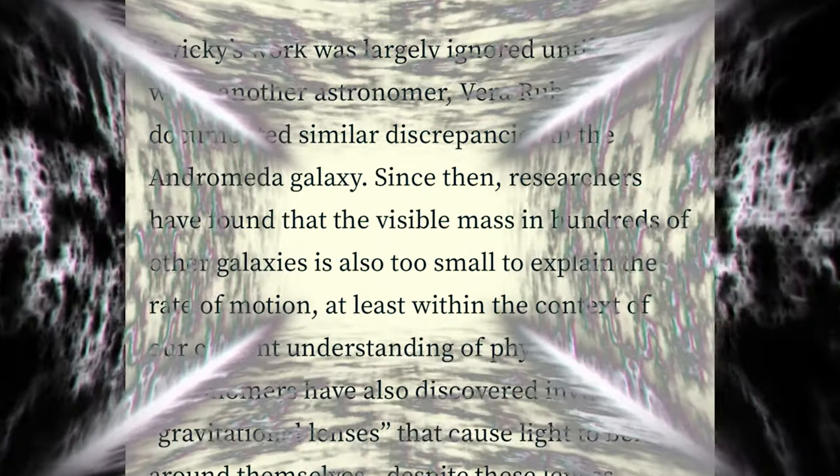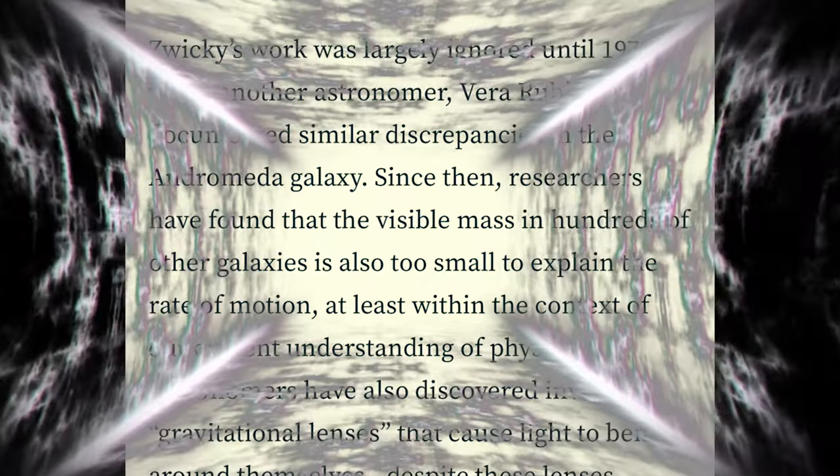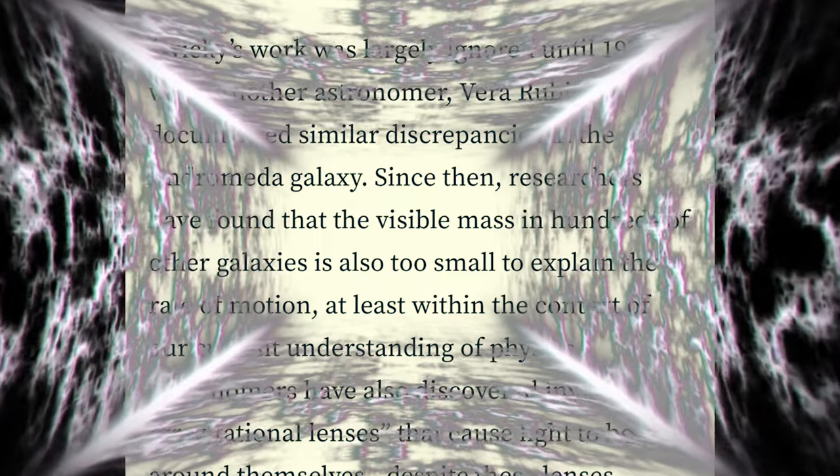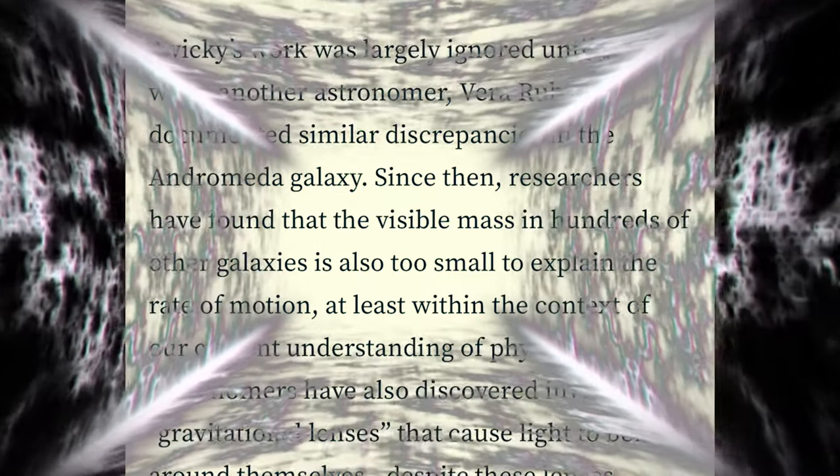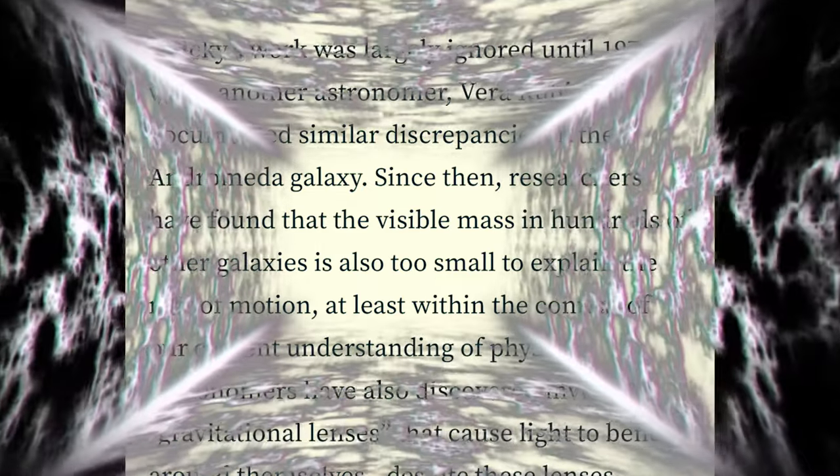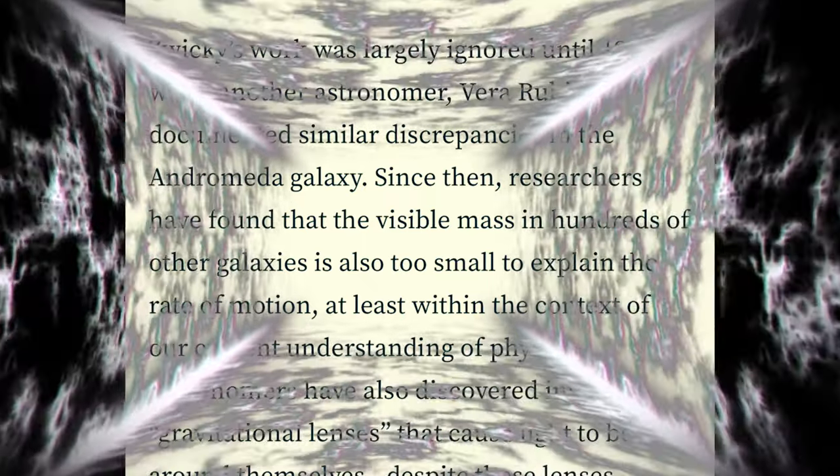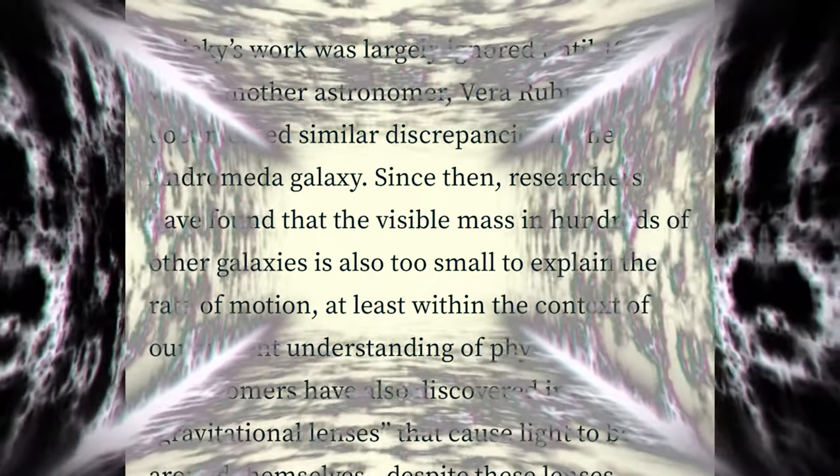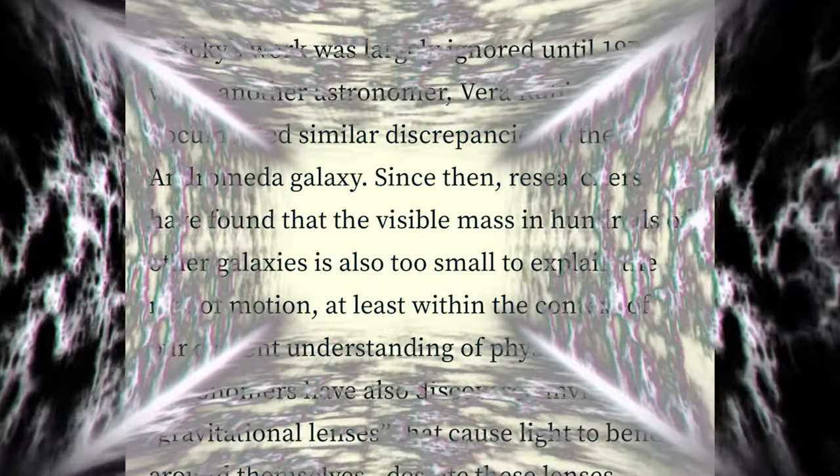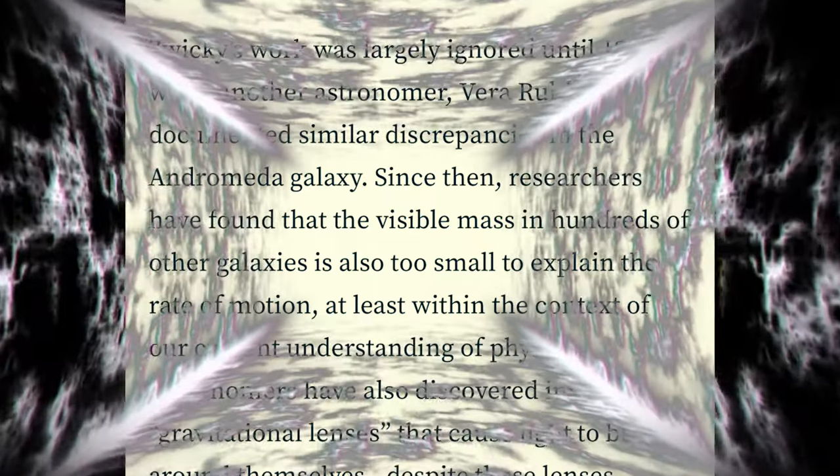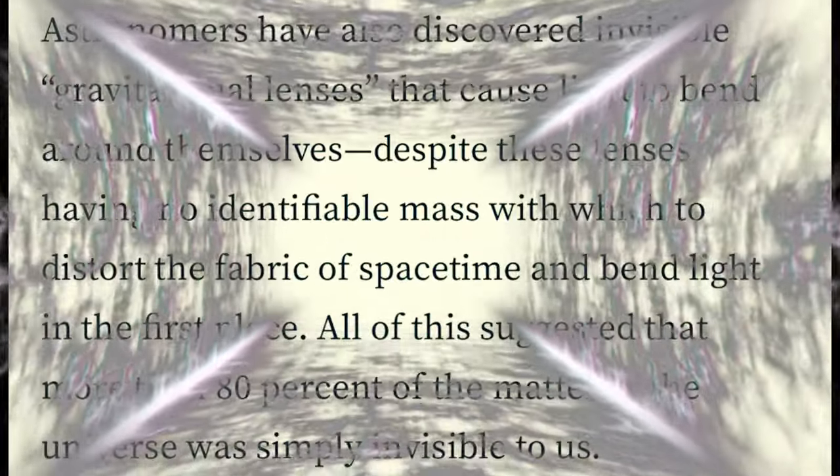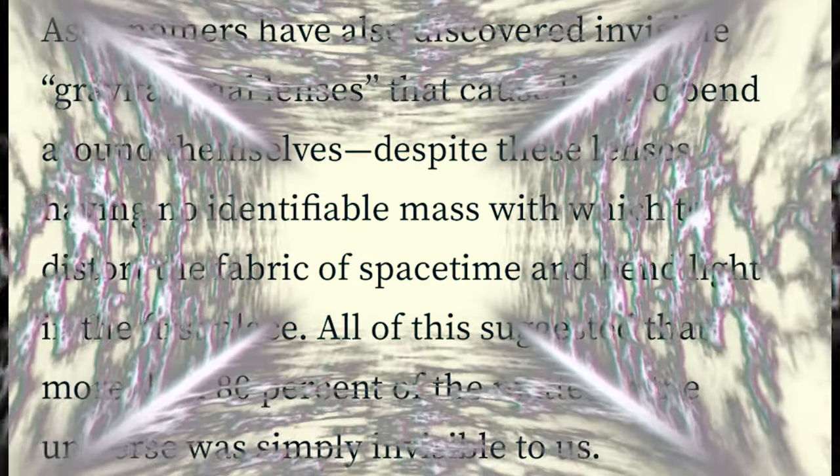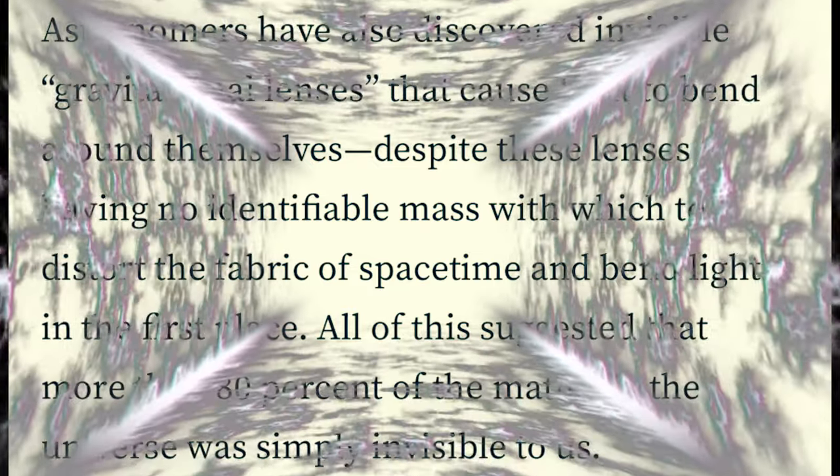This was largely ignored until 1970, when another astronomer documented similar discrepancies in the Andromeda galaxy. Researchers have found that visible mass in hundreds of other galaxies is also too small to explain the rate of motion, at least within the context of our current understanding of physics. Astronomers discovered invisible gravitational lenses that caused light to bend around themselves, the rainbow connection.